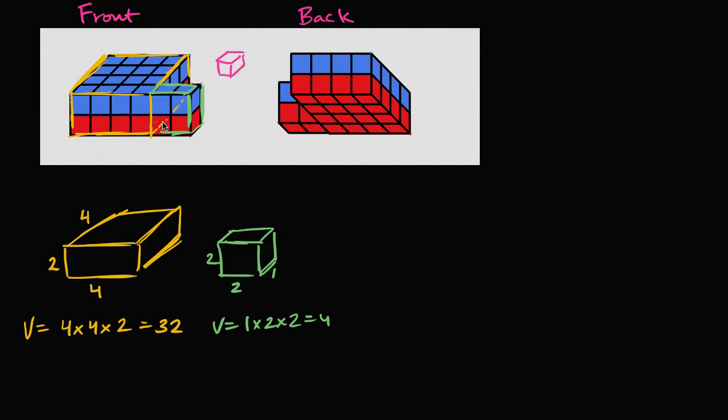And you just see that. There's one, two, three, four unit cubes in this object. So the total volume is going to be 32 plus four, which is equal to 36.